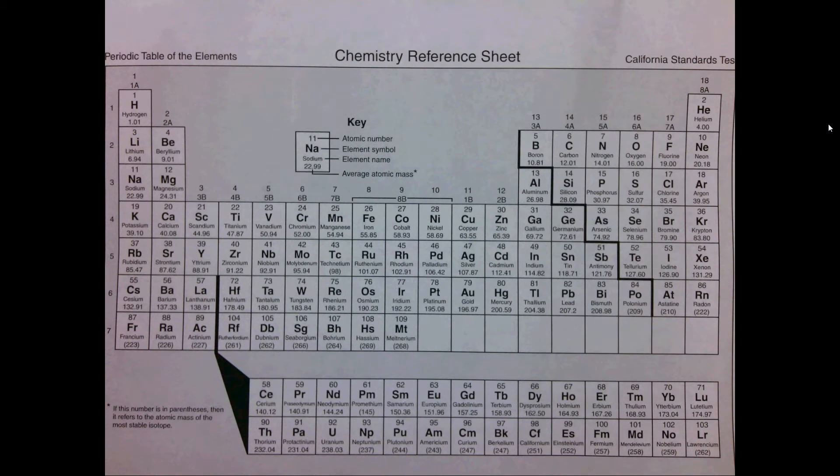So ionic compounds, generally speaking, occur between a metal and one or more non-metals, while covalent compounds occur between two or more non-metals.